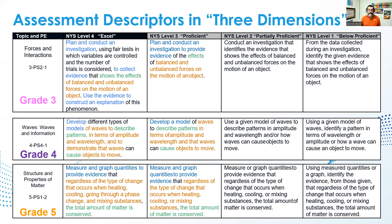I have color-coded the first two rubric areas to help you identify what the three dimensions are. I've color-coded 'plan and conduct an investigation,' which is a science and engineering practice; the cause and effect cross-cutting concept in green; and the disciplinary core idea of balanced and unbalanced forces on the motion of an object with the use of evidence to construct an explanation of this phenomenon. The three dimensions are in each one of these levels. This is a document you can look to in order to inform your instruction or the classroom assessments we have put together in Science 21.